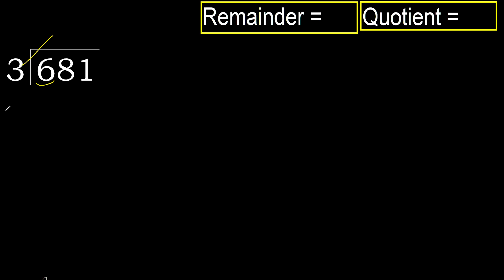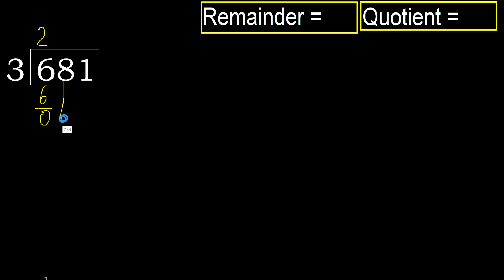3 multiplied by 3 is 9, which is greater. Multiplied by 2, 6 is not greater — ok. Subtract: 6 minus 6 is 0. Next.